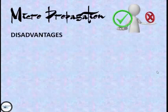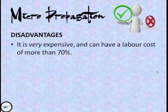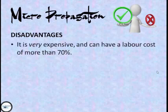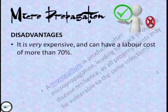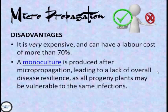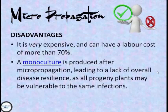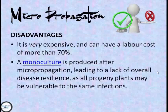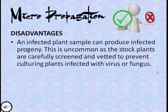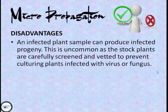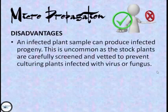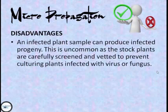Now let's move on to the disadvantages. This process is very expensive, and labor costs can account for more than 70%. A monoculture is produced after micropropagation, leading to a lack of overall disease resilience, as the progeny plants may be vulnerable to the same infections. Also, an infected plant sample can produce infected progeny, though this is uncommon as stock plants are carefully screened and vetted to prevent culturing plants infected with virus or fungus.